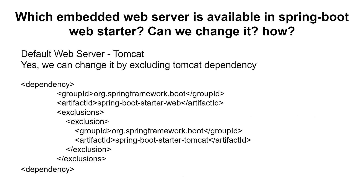The next question was: which embedded web server is available in the Spring Boot web starter, and can we change it? The default web server that comes with the spring-boot-starter-web dependency is Tomcat. If you want to change it, you need to exclude the Tomcat dependency from the spring-boot-starter-web dependency. Adding the exclusion removes the embedded Tomcat server, after which you can include an alternative server such as Jetty or Undertow.